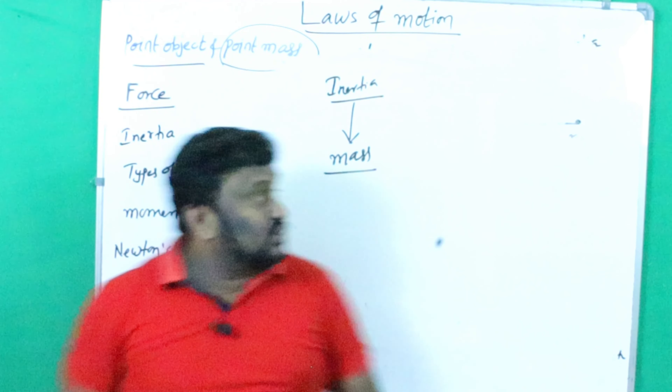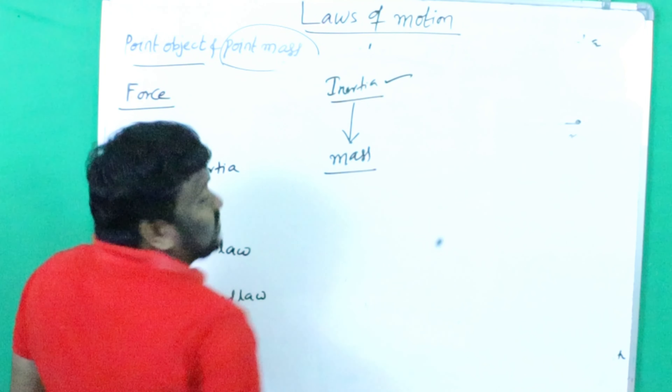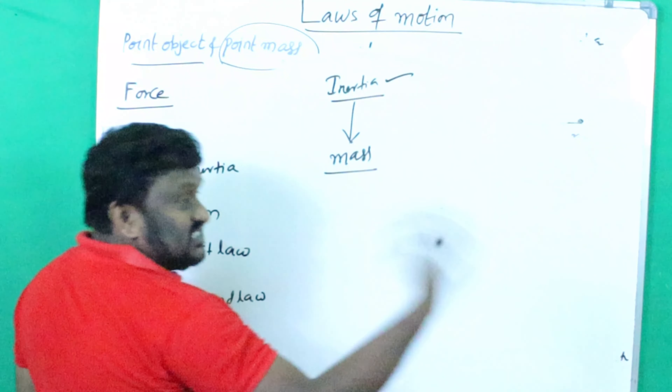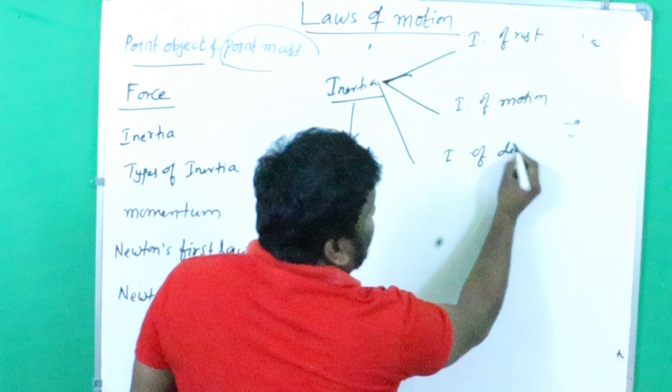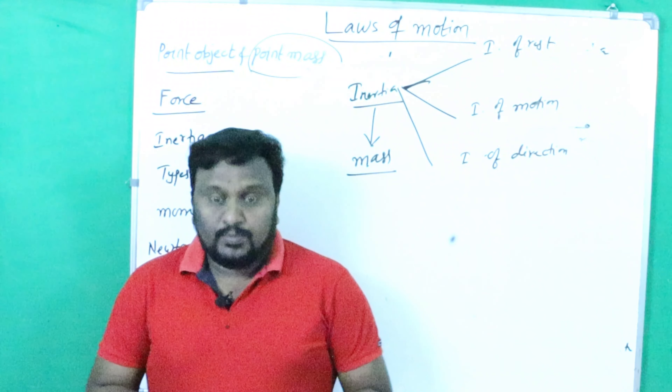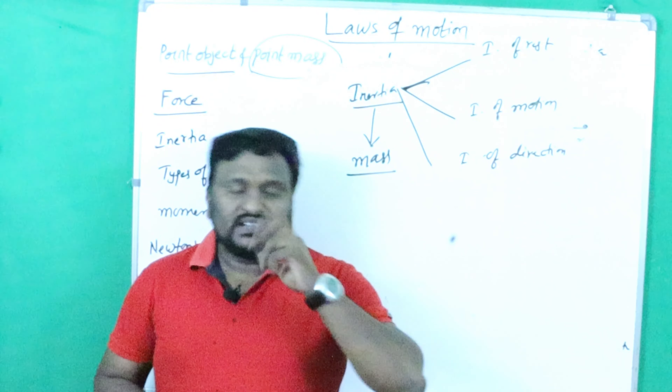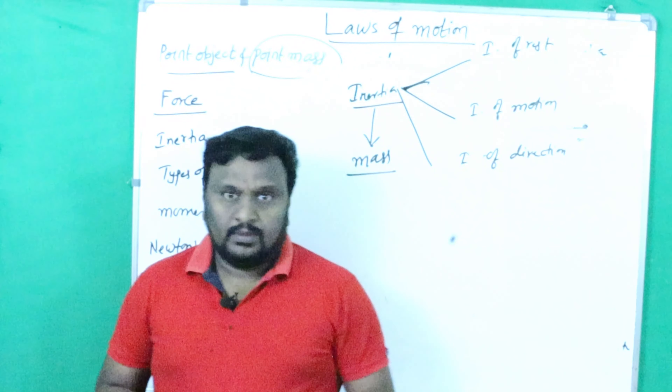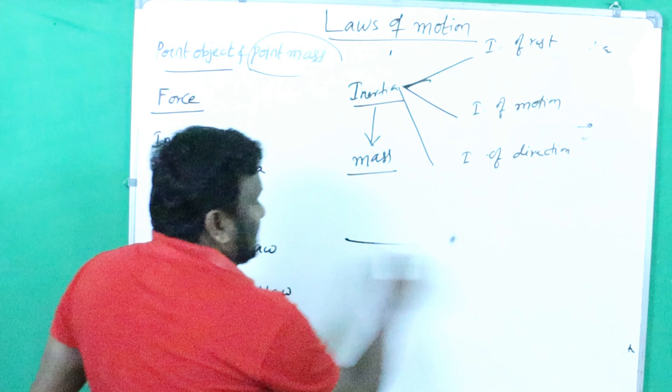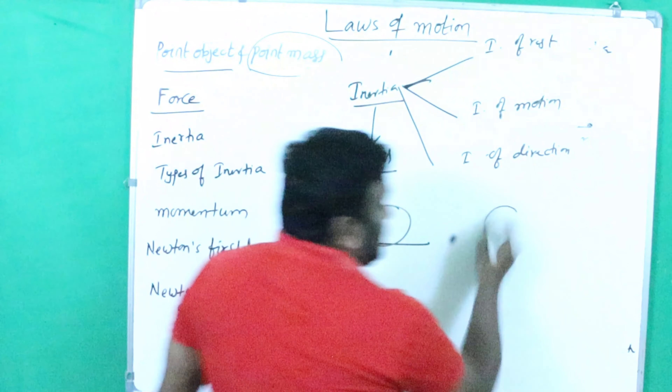If any body has more mass, it should be considered to have more inertia; a body with less mass has less inertia. That is why the units of mass can be considered as the units of inertia. Inertia means the opposition shown by a body to change its state. Inertia can be divided into three types: one is inertia of rest, second is inertia of motion, and third is inertia of direction.